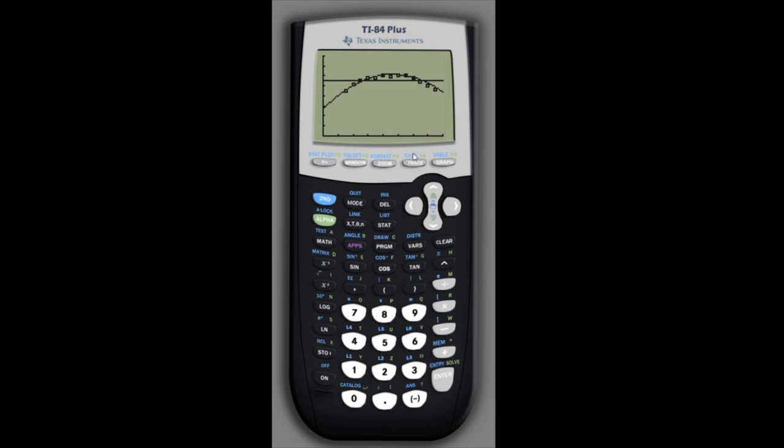That's going to be under the CALC menu, which is the second option on the trace key, so we'll hit second CALC. The intersect option is number 5, so we can scroll down and select that. This asks us where to look for the intersection. Since we need to find both intersections, first we're going to scroll over to the left - I'll hit the left key and hold that down to move the cursor close to the left one, doesn't have to be right at it but close by. Then just hit enter three times and it finds that first intersection at x = 27.7 and y = 28.